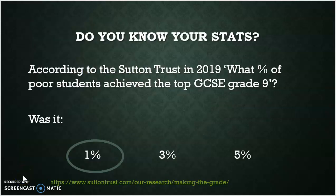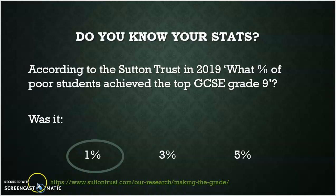Answer number one: do you know your stats? It was 1% of poor students achieved the top GCSE grade. Now this is compared to 5% of non-disadvantaged. I have popped this link below so you can have a little bit of a read of that report if you want to.